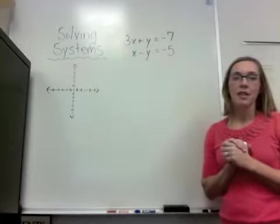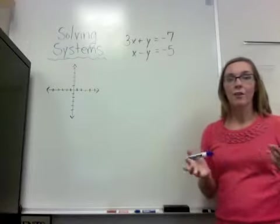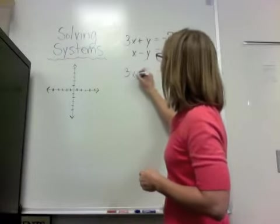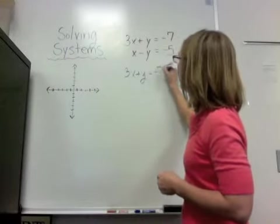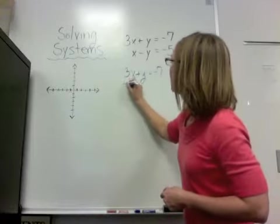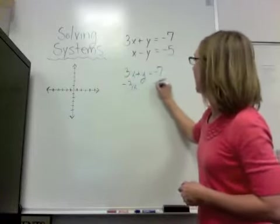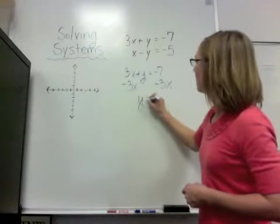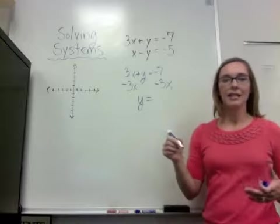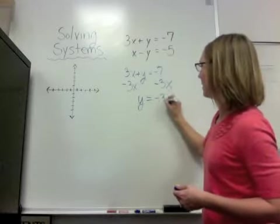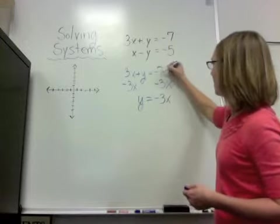So I'm going to solve them for y and graph them. I've got 3x plus y equals negative 7, and I want my y by itself. So I'm going to subtract the 3x to the other side. And I have y equals, because I like slope intercept form, that y equals mx plus b, I'm going to put my negative 3x first and then minus 7.